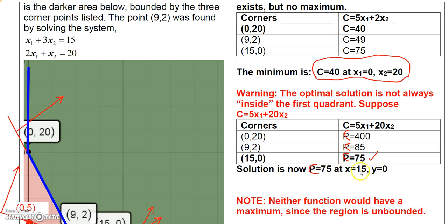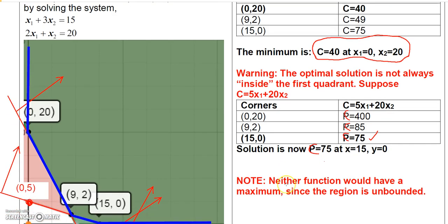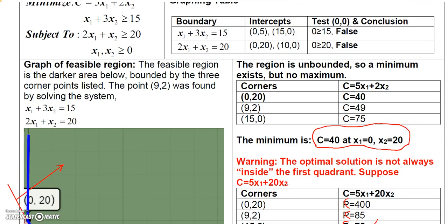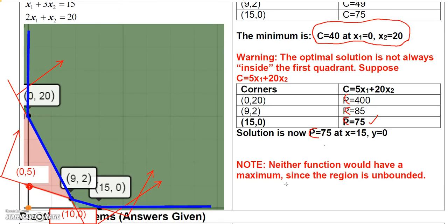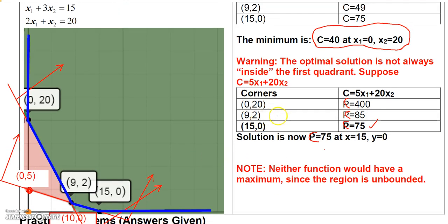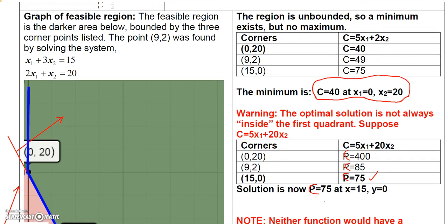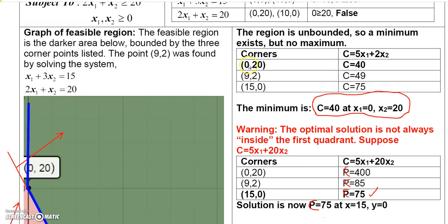With the revised objective function, the solution would be C = 75 at (15, 0). Going back to the guidelines: all we did was graph the feasible region, find the corner points, plug the corner points into the objective function, and determine the minimum value from that.